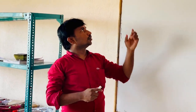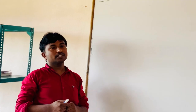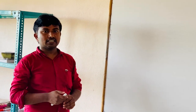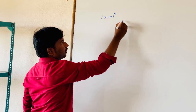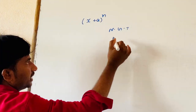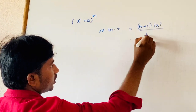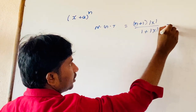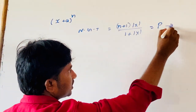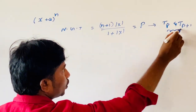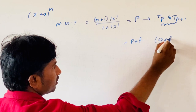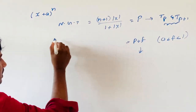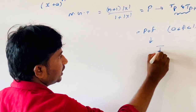Good morning students. Today we will discuss the useful values of combinations. In the previous class we discussed the NGT term — in the expansion of (x+a)^N, how to find the numerically greatest term. The formula is: P = (N+1) × |x| / (1 + |x|). If P is an integer, then T_P and T_(P+1) are two NGT terms. If P = integer + fraction (0 < f < 1), then there is only one NGT term, T_(P+1).